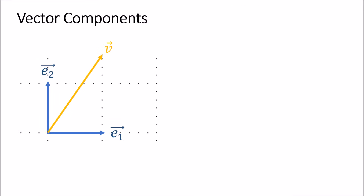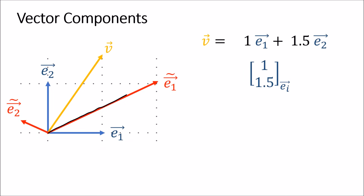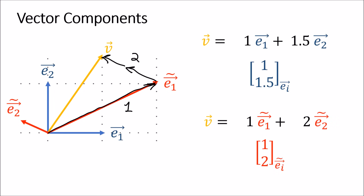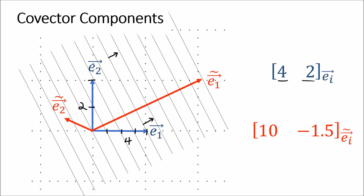Vector components are obtained by measuring how many basis vectors are needed to make up the vector. Of course, if we measure the vector using a different basis we'll get different vector components. Covector components are obtained by counting how many stack planes are pierced by each basis vector. With this co-vector stack, the first basis vector pierces four stacks and the second pierces two. Using different basis vectors would give different components for the co-vector.